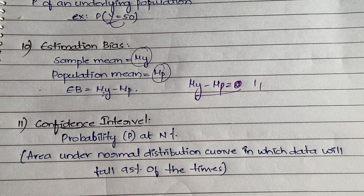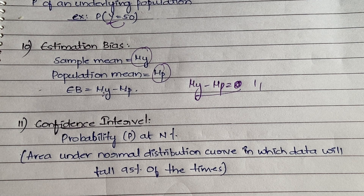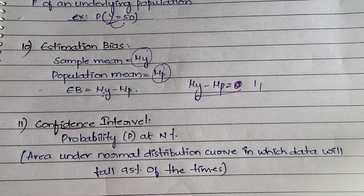The eleventh and last definition is confidence interval. It is the probability at n percent confidence — for example, at 95% confidence, what is the probability? You will be given charts in the exam so you don't need to memorize values. Simply put, it is the area under the normal distribution curve in which data will fall 95% of the times when you are 95% confident about the data.